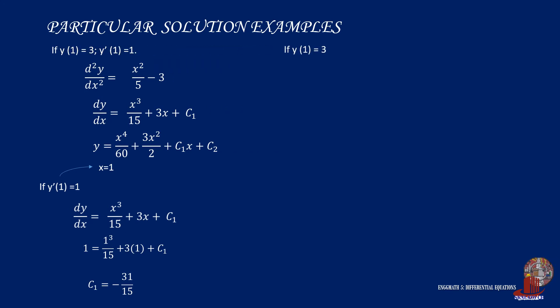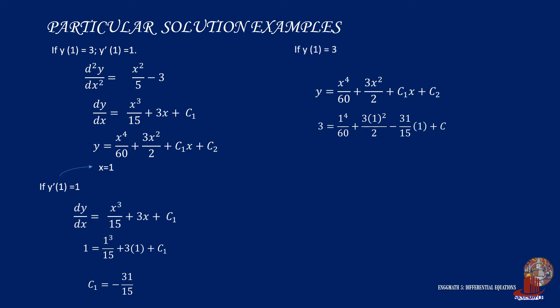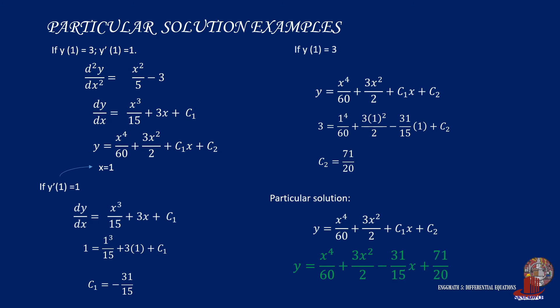Next, we use the condition that y equals 3 when x equals 1. Substituting into the general solution gives: 3 equals 1 to the fourth power over 60 plus 3 times 1 squared over 2 minus 31 over 15 times 1 plus c2. Simplifying, we find c2 equals 71 over 20. With both arbitrary constants identified, the particular solution is y equals x to the fourth power over 60 plus 3x squared over 2 minus 31 over 15 times x plus 71 over 20.